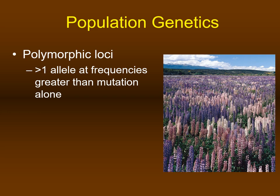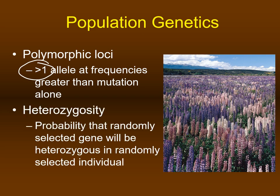One of the key underlying mechanisms of genetic variability in populations is the existence of polymorphic loci. A locus is the term for the position of a gene on the chromosome. Polymorphic loci have more than one allele, and it's important that these different alleles exist in the population at frequencies greater than those determined by mutations alone. Another important feature that facilitates genetic heterogeneity is heterozygosity, defined as the probability that a randomly selected gene will be heterozygous in a randomly selected individual.